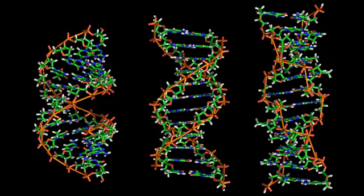Within cells, DNA is organized into long structures called chromosomes. During cell division, these chromosomes are duplicated in the process of DNA replication, providing each cell its own complete set of chromosomes.